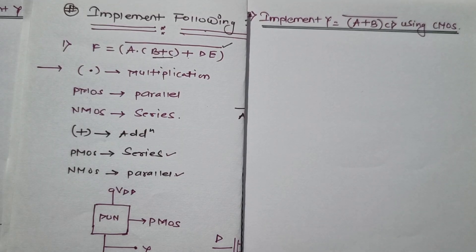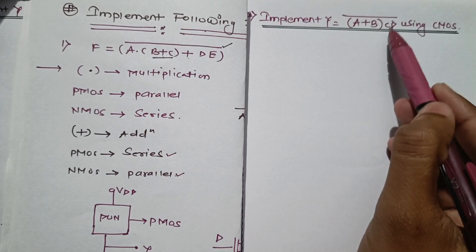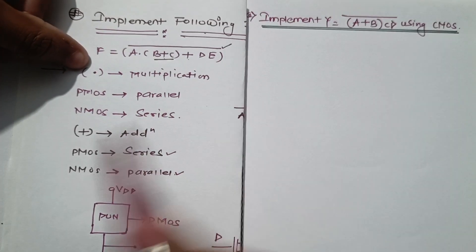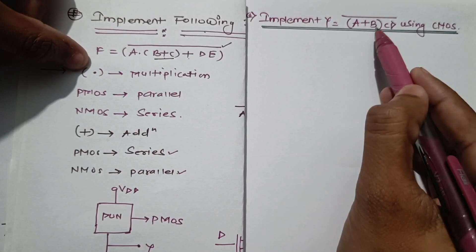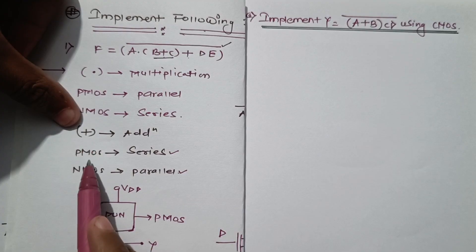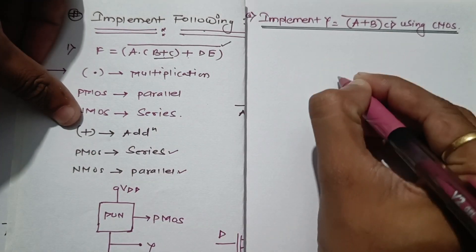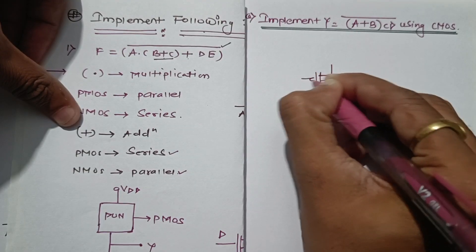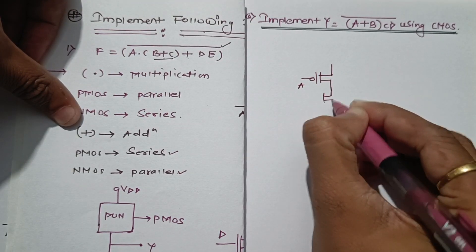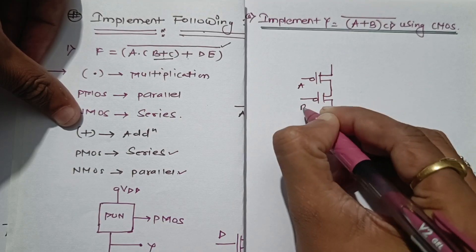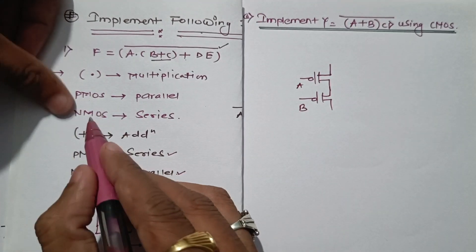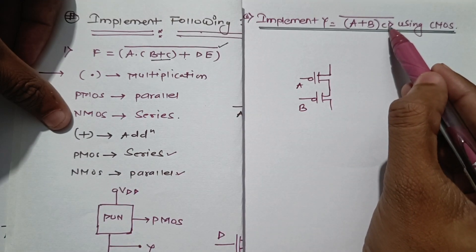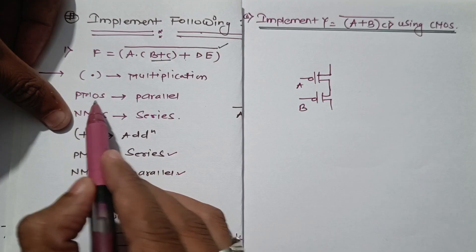We have a second question: (A + B) · CD whole bar, implemented using CMOS. The same principle applies — either multiplication or plus. Starting with A plus B: for plus, PMOS will be in series. We take a PMOS transistor with input A and similarly a PMOS transistor with input B — these two are in series.